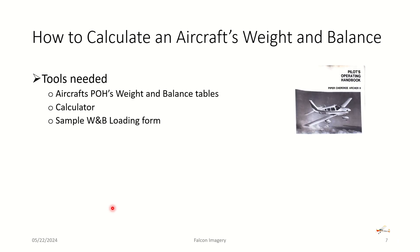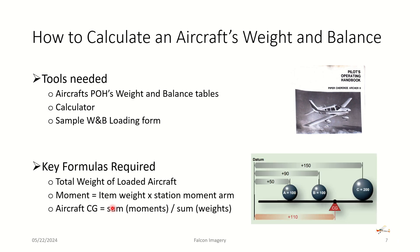So how do we go about calculating an aircraft weight and balance? You need the Pilot Operating Handbook to look at the POH's weight and balance tables. You'll need a calculator for some simple math, or you can use a simple weight and loading balance form. You'll need to be capable of some simple addition, math, and division. You need to know a few key formulas: sum up the total weight of the loaded aircraft, calculate the moments based on item weight times the station moment arm, and then determine the aircraft's center of gravity by taking the total sum of moments divided by the total sum of weights.